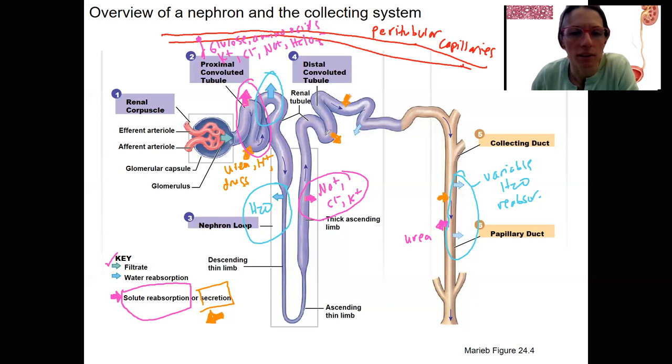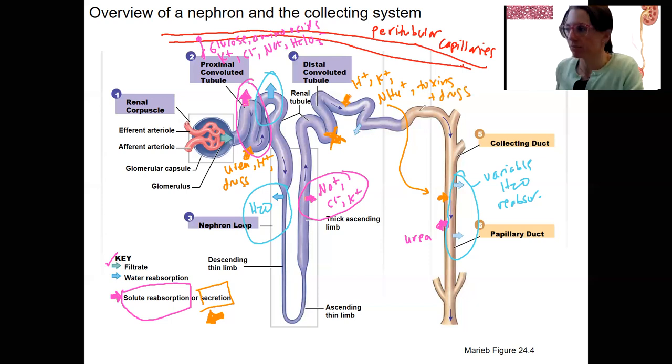We can ignore this here because we have this one here. This is all the distal convoluted tubule. Here we're going to have some more hydrogen. Potassium actually gets secreted and nitrogenous wastes. Last thing, we're going to have some more toxins and drugs. That's our overview.